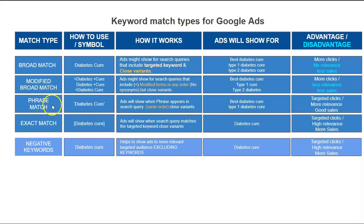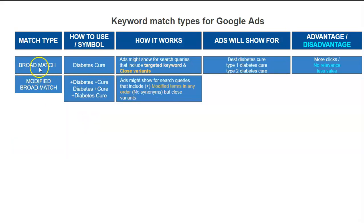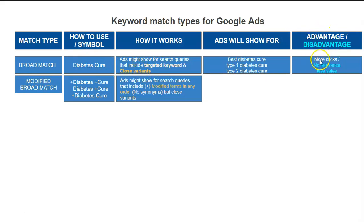To understand those changes, let's first understand how they are behaving currently. Broad match — if you're using a keyword like 'diabetes cure,' Google will show your ads for that targeted keyword as well as close variants. The advantage is more link clicks, but the disadvantage is less relevancy — your ad will show for a lot of other keywords that are not necessary for you, resulting in fewer sales.